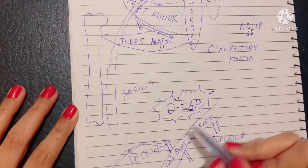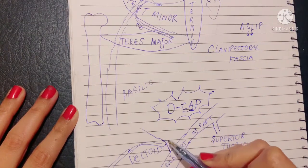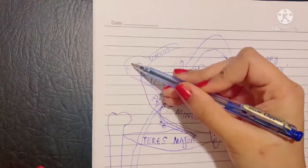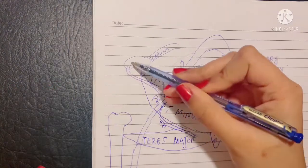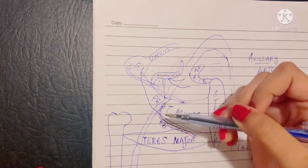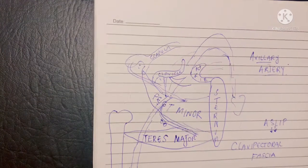Moving on, acromial branch. Now this branch it goes and goes over the acromion and takes part in anastomosis across the acromion process, which we will talk more in detail later.